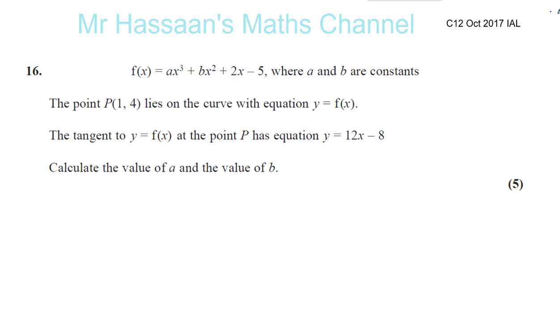The function is f(x) = ax³ + bx² + 2x - 5, where a and b are constants. We're told that the point P(1,4) lies on the curve with this equation, and also the tangent to y = f(x) at the point P has equation y = 12x - 8. We've got to use this information, these two pieces of information, to find what a and b are.